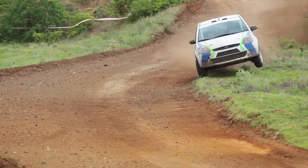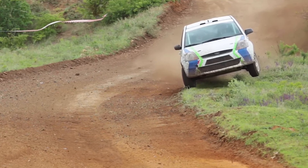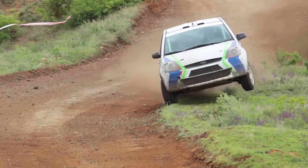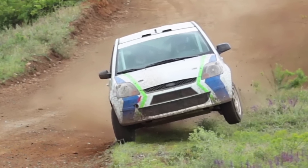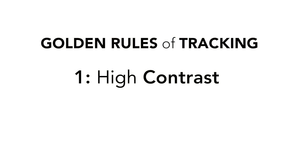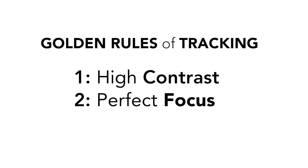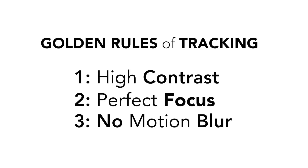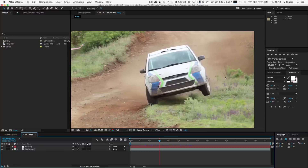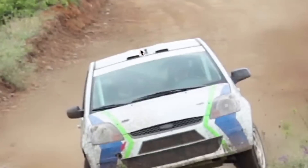To track a point it must have the following qualities: high contrast — ideally black on white — perfect focus, so as little blur as possible, and no motion blur either, so pay attention when you set up and move your camera. I have tried many different points on this shot and found that the best one, even if not outstanding, is this little point here on top of the car.